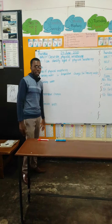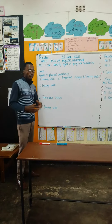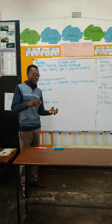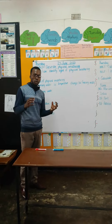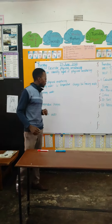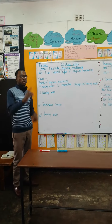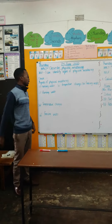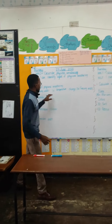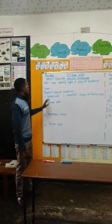What causes physical weathering? Physical weathering is caused by putting pressure on a rock, and this pressure will cause the rock to fall off. Now for this to happen, we need what we call agents of physical weathering. So on the board, we get three agents of physical weathering.